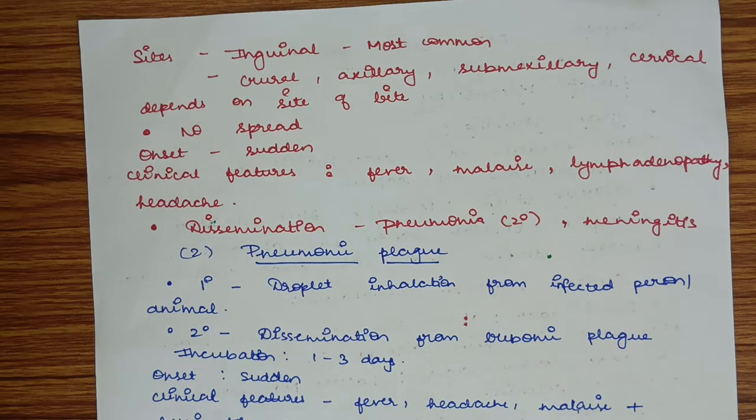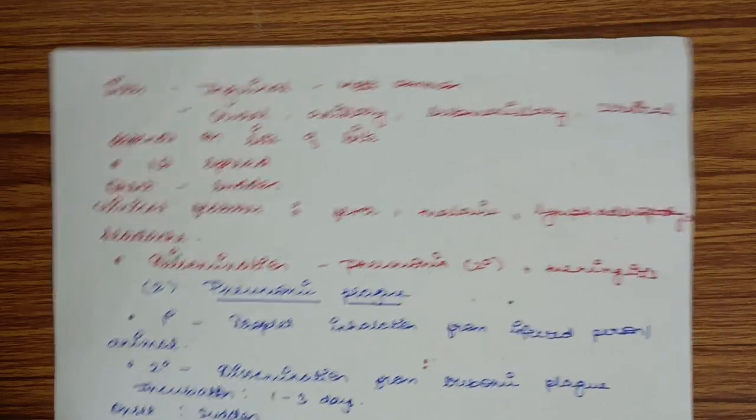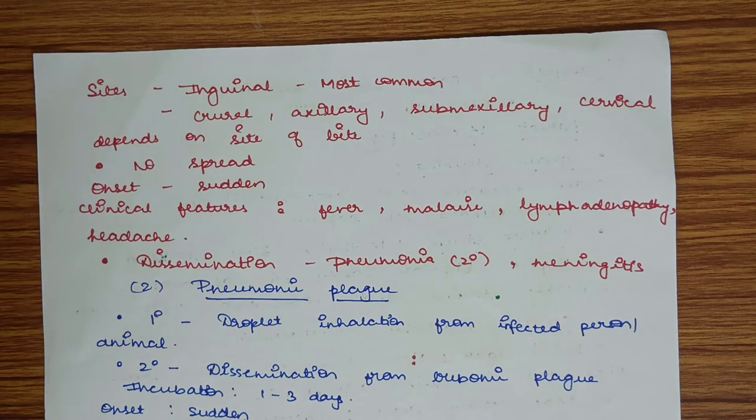Onset is sudden. Clinical features include fever, malaise, lymphadenopathy, and headache. Dissemination of bubonic plague can lead to pneumonic plague or meningitis.